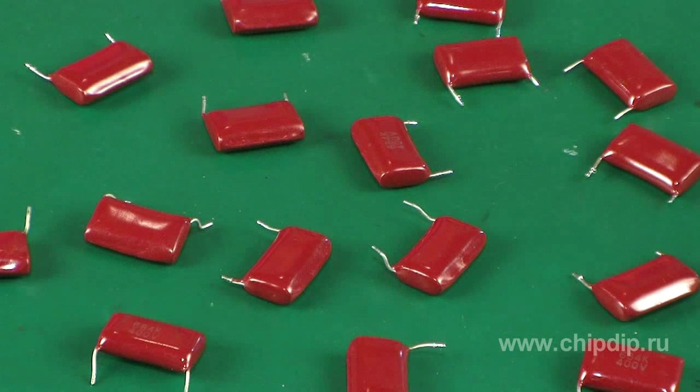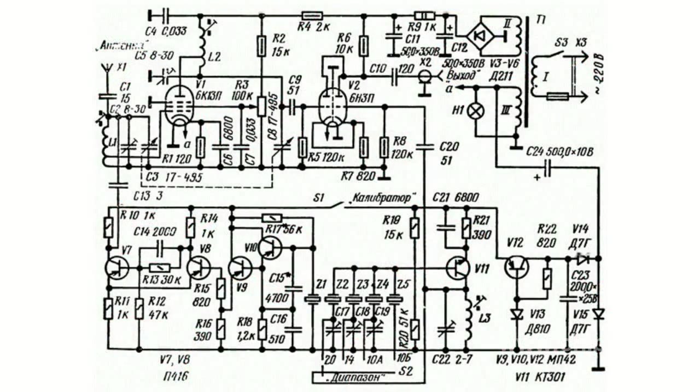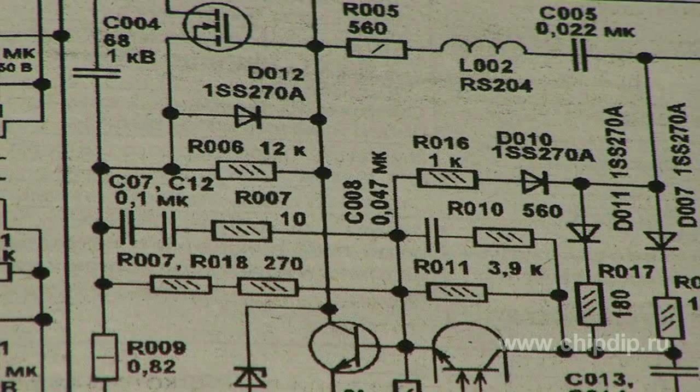When working with schematic circuit diagrams you should know graphic conventions of the elements used in a scheme. Let's take a view at the peculiarities of graphic conventions of fixed capacitors. On electrical diagrams fixed capacitors are denoted by two center-ended parallel segments representing capacitor plates.